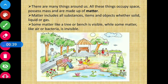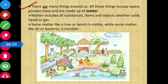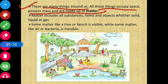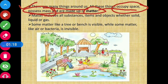Let us first get a brief about this chapter. The things around us — hamare aas paas sab cheez hai — have different states, like solid, liquid, or gas, which we are going to study. There are many things around us. All these things occupy space, possess mass, and are made up of matter. These things possess mass, occupy space, and are all made up of matter.